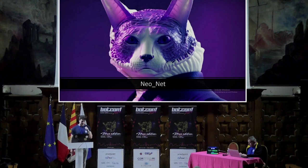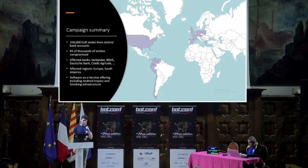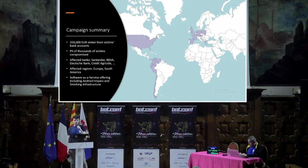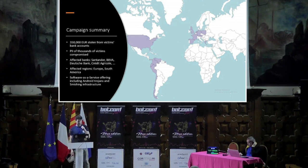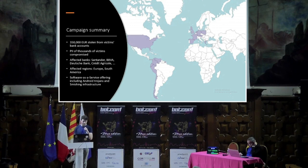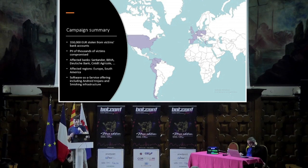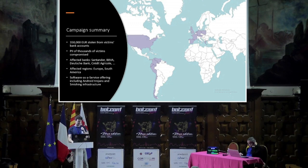The first case study is Neonet. Neonet is a threat actor targeting mostly banking users in Spain and South America. In total, during his campaigns, over 350,000 euros were stolen from victims' bank accounts, and he also compromised the personal information of thousands of victims over a roughly two-year campaign. The affected banks were mostly Santander and BBVA, but also Deutsche Bank and Crédit Agricole in France. His campaign was based on a software-as-a-service offering including Android Trojans, a smishing-as-a-service infrastructure, and dedicated phishing panels sold to affiliates.